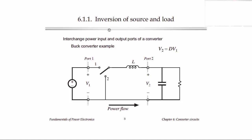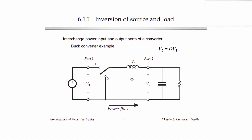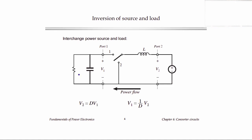One thing we can do to a converter is change the positions of the power source and the load. Here I've drawn a box around the buck converter, with input terminals labeled V1 where the source of power is connected, and output terminals labeled V2 where we've connected a load with a filter capacitor. Power flows from the source to the load, and since this is a buck converter, V2 equals the duty cycle times V1. Now one thing we could do is connect our power source to port 2 and our load to port 1.